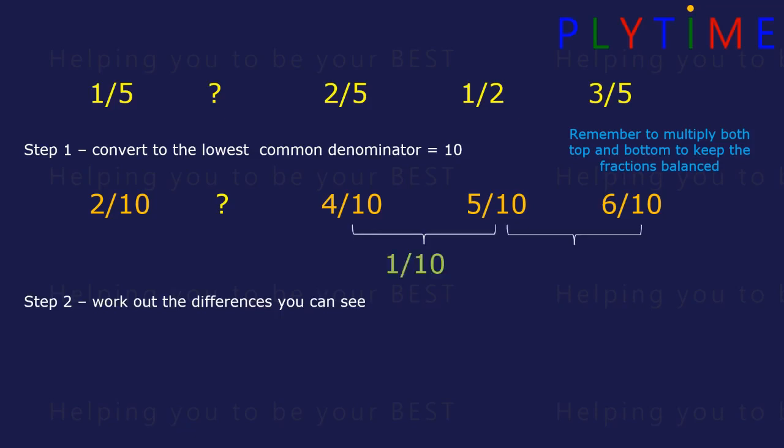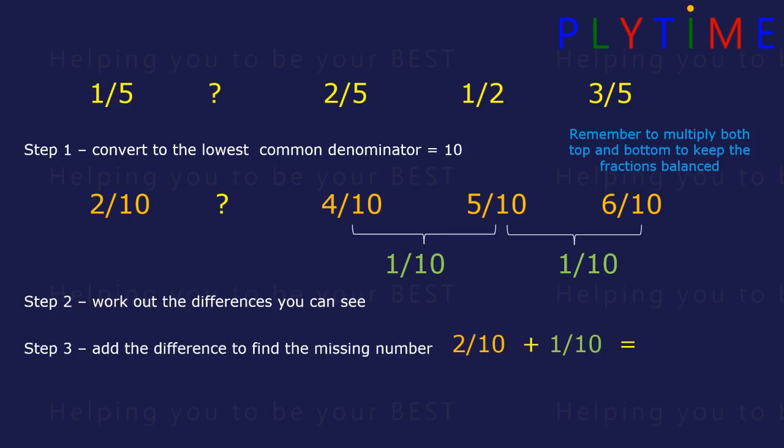The difference is 1 tenth, 1 tenth. We can add that to the 2 tenths: 2 tenths plus the difference of 1 tenth equals 3 tenths. Can we convert it to a simpler form? No we can't in this case, so the question mark is 3 tenths.